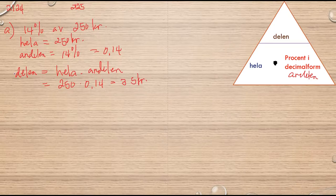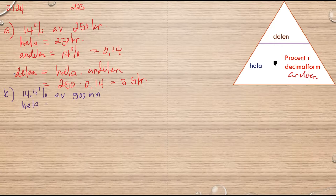Ska vi titta på B. Då har jag där 14.4 procent av 500 millimeter. Så har jag hela, det är 500. Andelen är 14.4 eller 0.144.